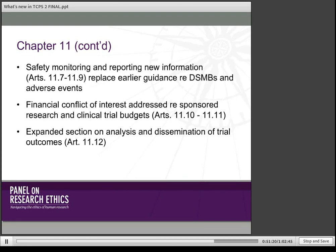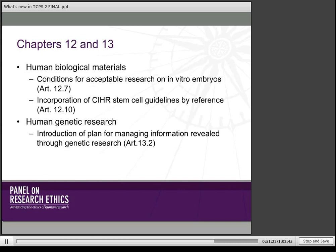The final two chapters cover human biological materials and human genetic research. Not a lot that's new, but we do set out conditions for acceptable research on in vitro embryos, and we have incorporated the CIHR stem cell guidelines by reference. We are undergoing a process where those guidelines will, hopefully by next spring, be found within the TCPS itself. Under human genetic research, we have introduced the need for a plan to manage information that is revealed through genetic research.